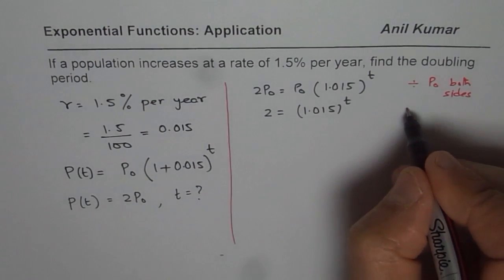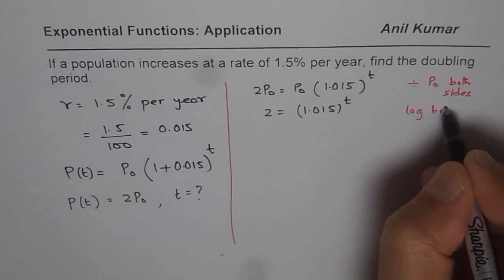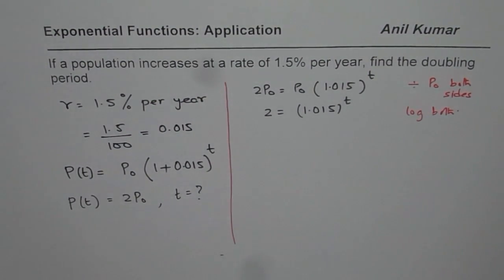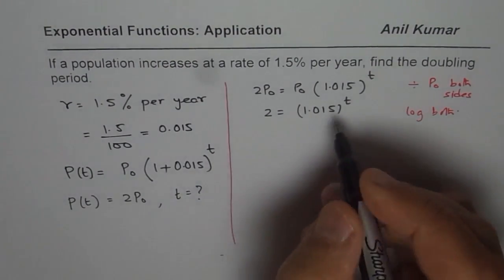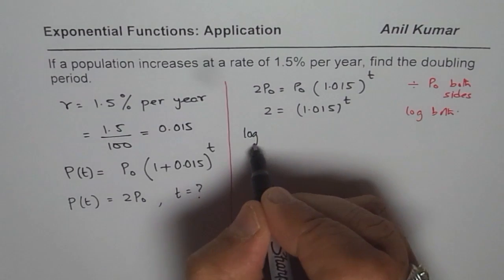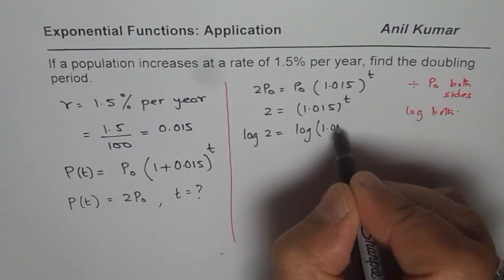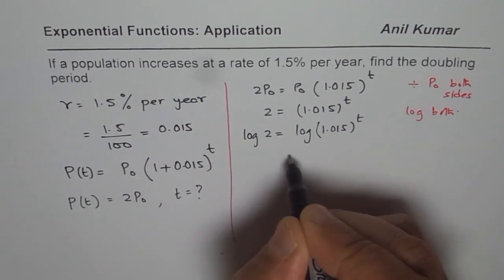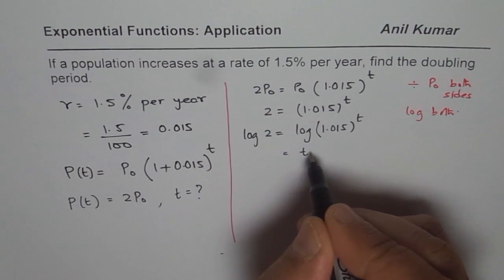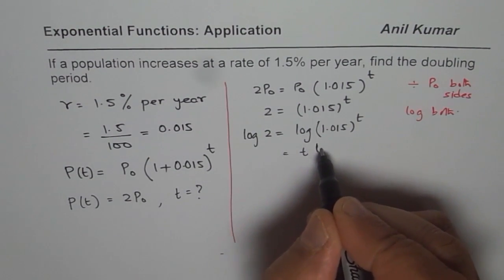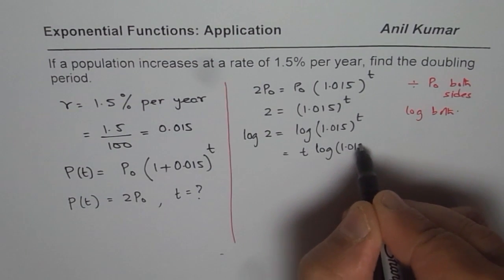Now we can take log both sides. So this is log to the base 10. What we get here is log to the base 10 of 2 equals to log to the base 10 of 1.015 to the power of t. Applying the power rule, we could write the right hand side as t times log of 1.015.